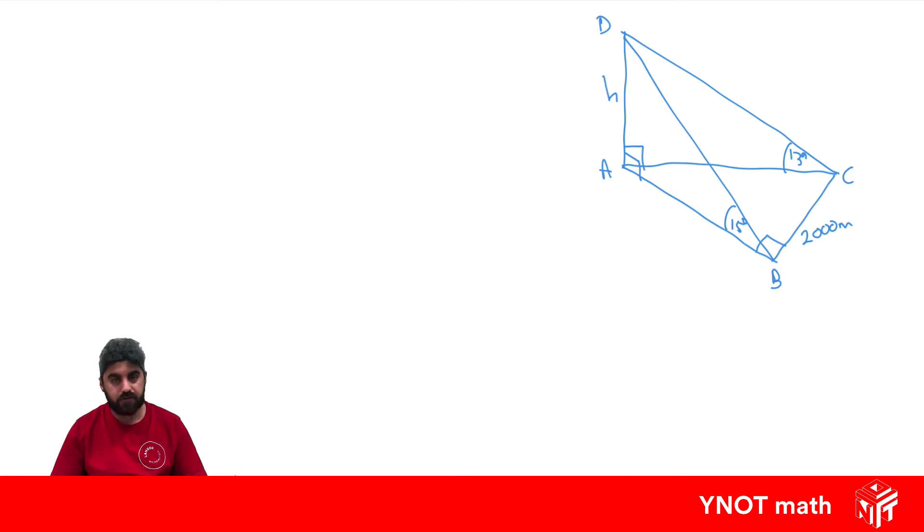To do this we just need to develop quite a few equations and then combine everything we know. First we're going to use our two standing up triangles off the ground and apply our normal tan ratio. So tan 15 equals the opposite side which is H over the adjacent side which is AB, and in the other upright triangle tan 13 equals the opposite side H over the adjacent side which is AC.